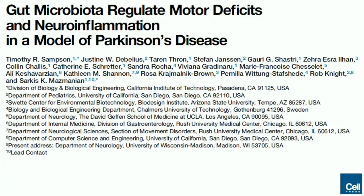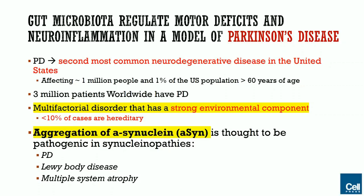Now I'll briefly go over microbiota's role in neuroinflammation and Parkinson's disease in a mouse model. Parkinson's disease is a common neurodegenerative disorder affecting approximately 1 million of the U.S. population and 1% of those over 60 years old, affecting 3 million people worldwide. It is a multifactorial disorder with a strong environmental component — only 10% of cases are hereditary. The aggregation of alpha-synuclein (a-syn) is thought to play a pathologic role in synucleinopathies, which include Parkinson's, Lewy body disease, and multi-system atrophy.